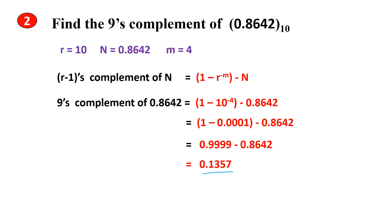As with before, there is a shortcut. Since we want the 9's complement and there are 4 digits in the fraction part, we write four 9's after the decimal point — that is 0.9999 — and subtract the given number. Writing 0.9999 minus 0.8642 directly gives the answer 0.1357 without solving the intermediate steps.